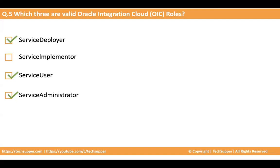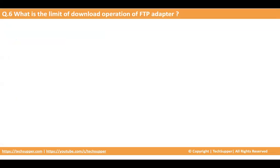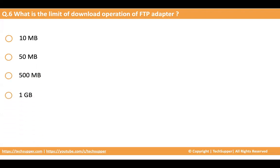The next question: what is the limit of the download operation of the FTP adapter? When you use the FTP adapter it has multiple operations, and one of them is download. The download operation has some limitation — but what is the limit? The options are 10 MB, 50 MB, 500 MB, or 1 GB. If you don't know, you can find it on Google or in the service limits documentation for Oracle integration.